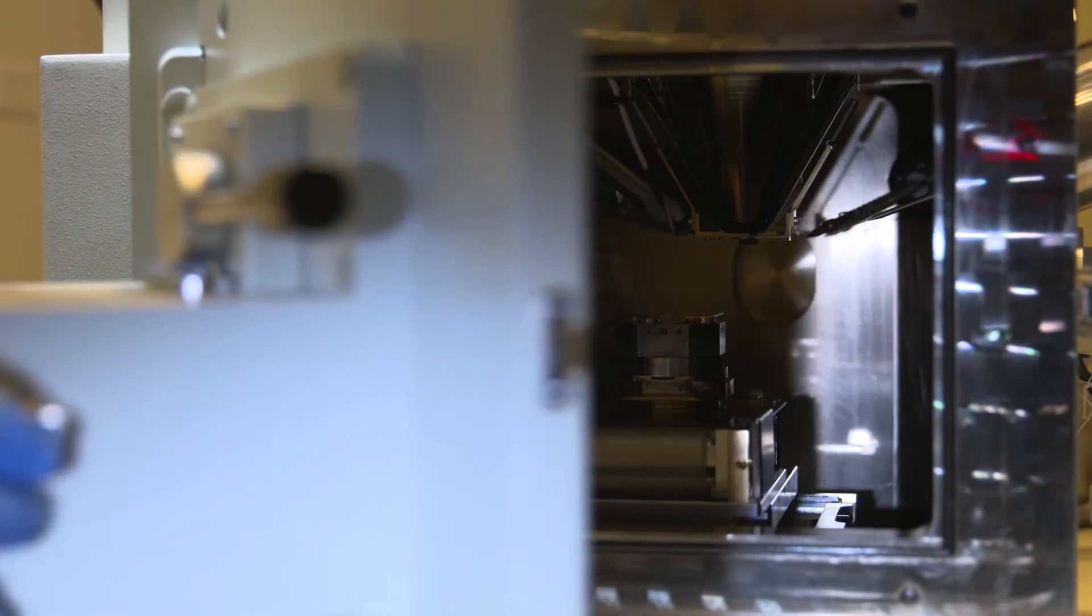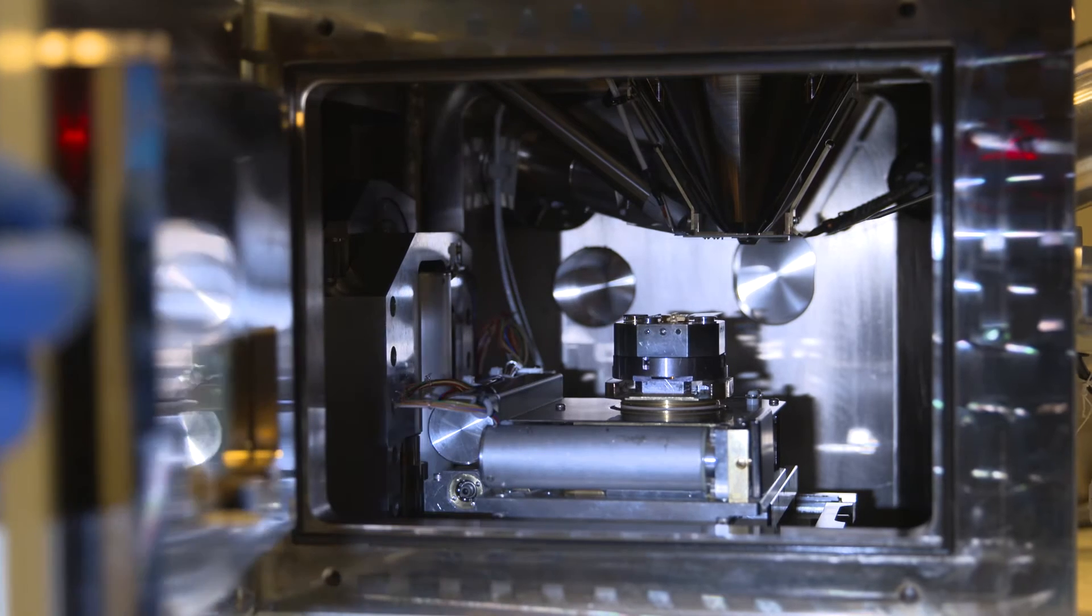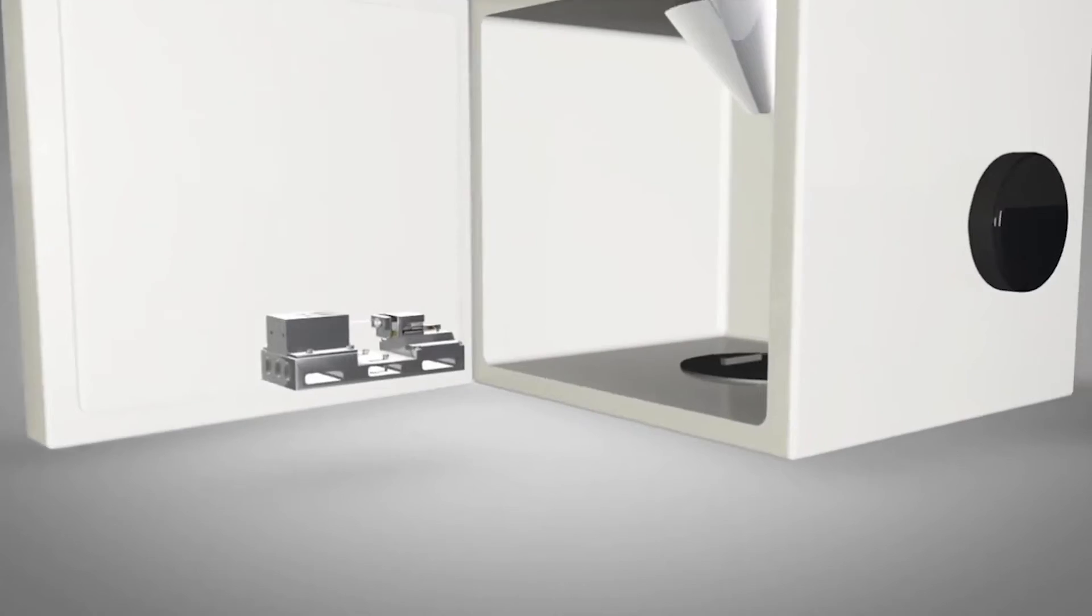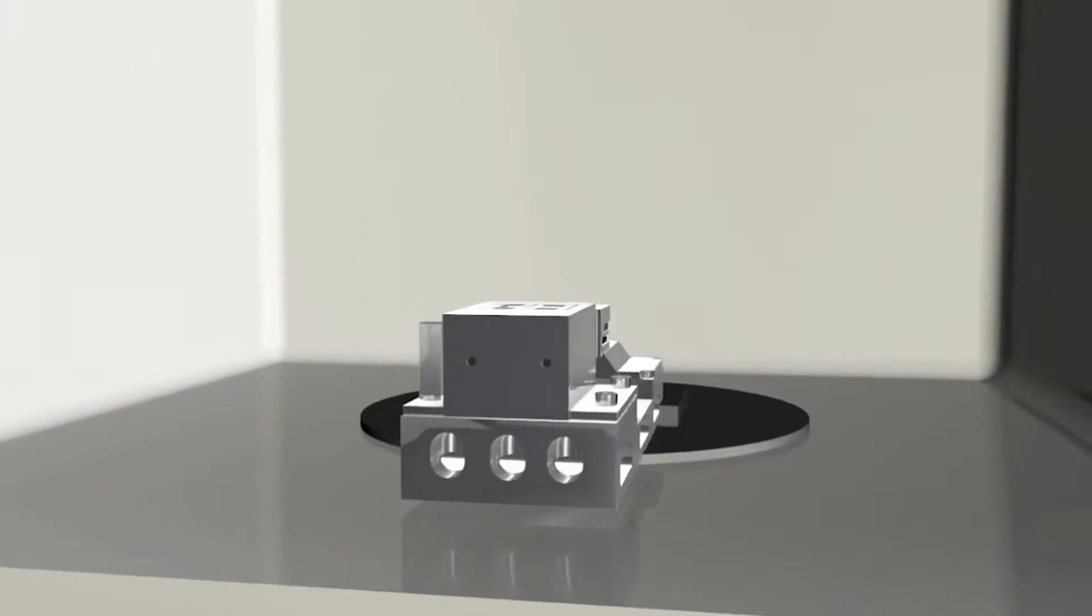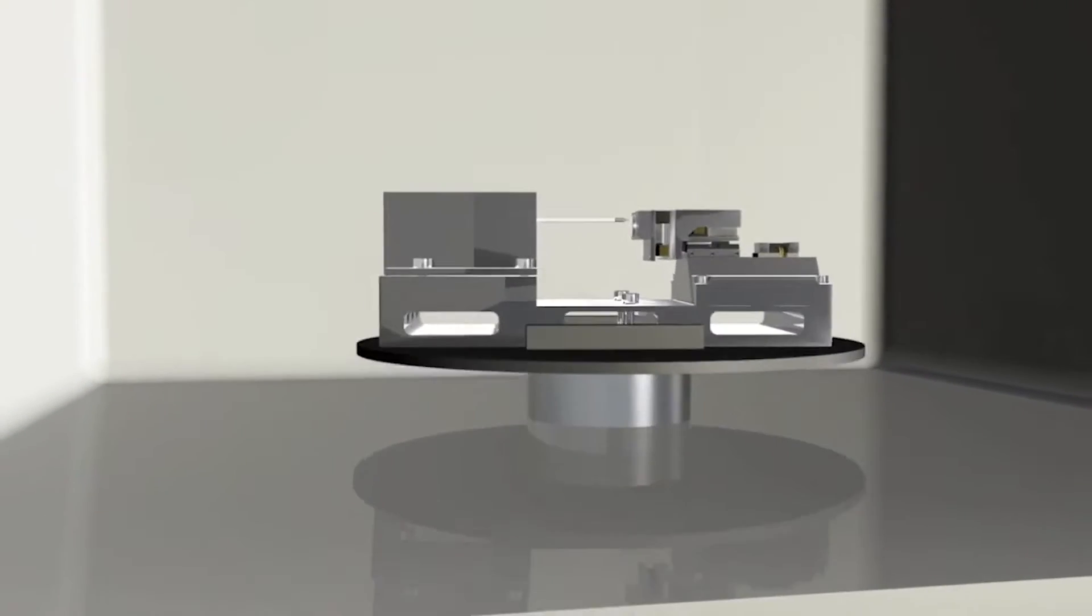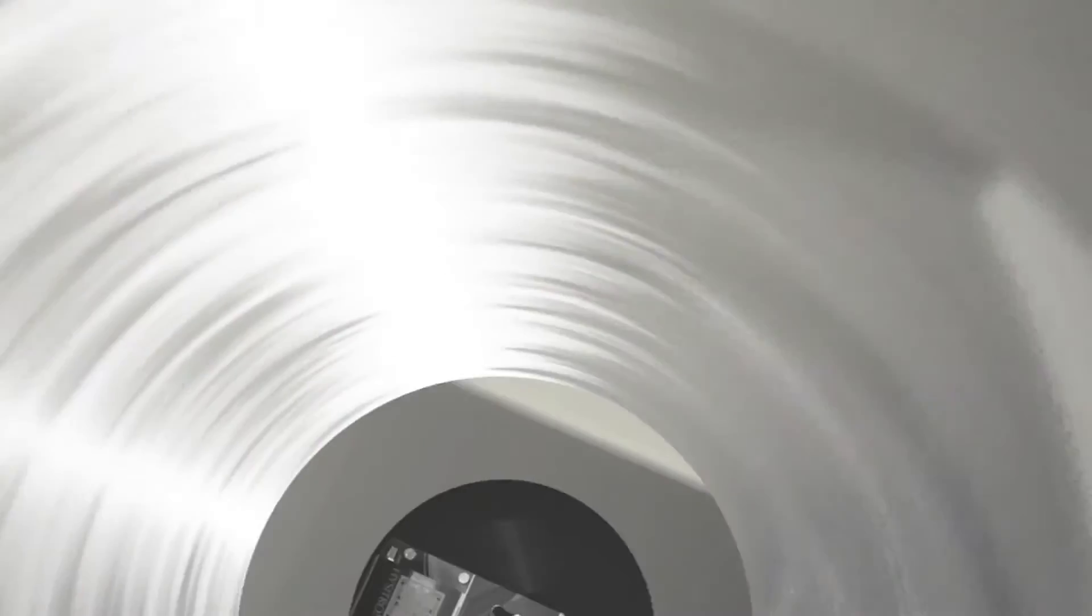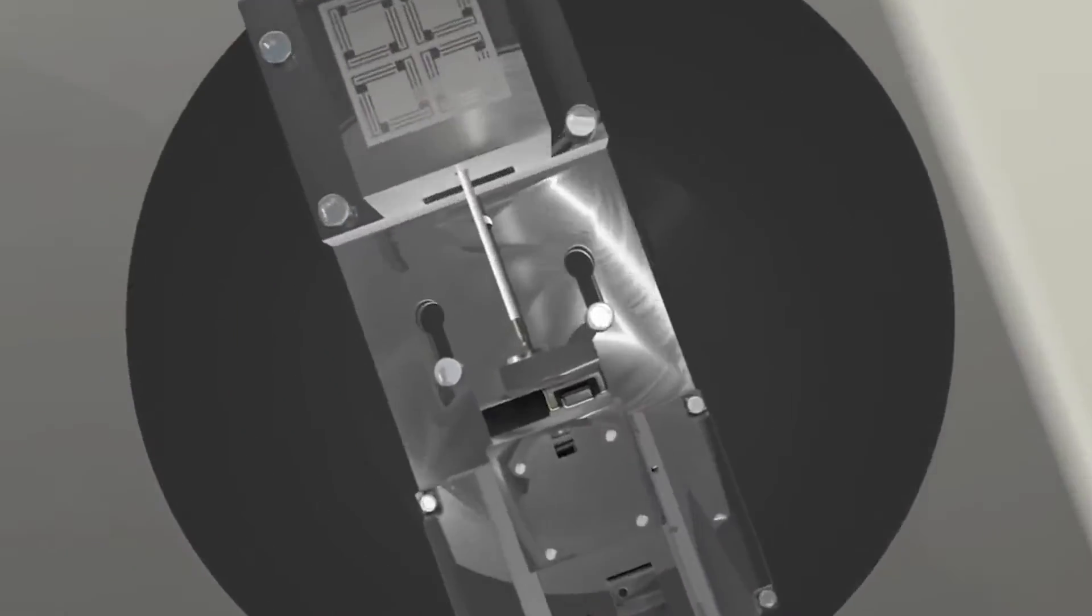Housed within the focused ion beam are two in-situ mechanical testing tools, a micro load frame and an in-situ nano indenter. The combined setup allows researchers to gain new insight into the deformation and failure of materials by linking quantitative load displacement data with high resolution imaging.